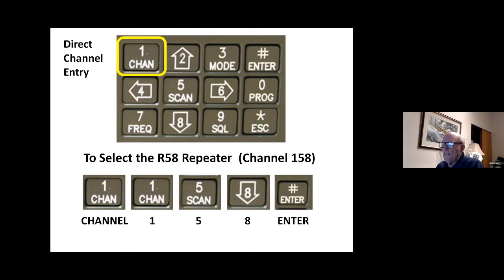Here's the direct channel entry. This is what most of us do on the Technasonic. And here's the sequence of events. There's five buttons to push: channel 158 enter. The analog repeater channel looks a little easier to remember because you just have to add a one. So R58 is channel 158. R47 is channel 147. So channel 158 enter to enter the R58 repeater.